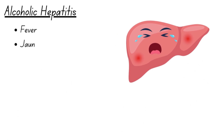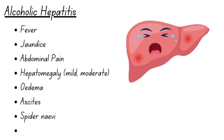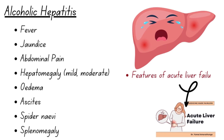Alcoholic hepatitis presents a spectrum of manifestations. Depending on its severity, patients may experience a range of symptoms from asymptomatic cases to severe disease. Common symptoms include fever, jaundice, abdominal pain, mild to moderate hepatomegaly, edema, ascites, splenomegaly, and in severe cases, features of acute liver failure may be present.